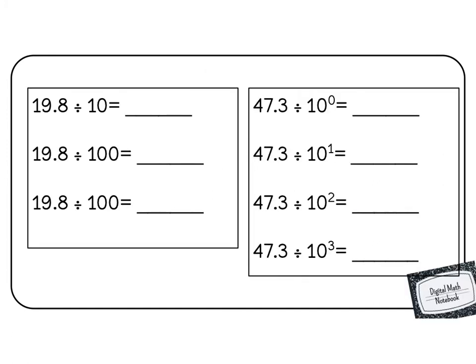All right guys, your turn to join me. These problems are in your digital math notebook, so make sure you're pausing and typing in your answers. Here's a problem just like what we did before. We're going to divide 19.8 by 10. 10 has 1 zero, so we're going to move 1 place value to the left. All of these are division, which means all of these are going to be getting smaller, so we're always going to be moving left. So that number would be 1.98.